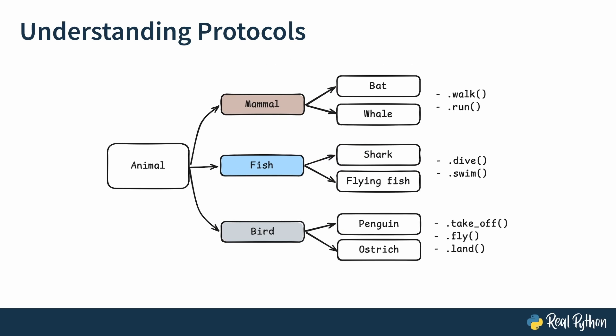For example, a whale is a mammal, so it should go under mammal in your hierarchy. However, whales cannot walk and they cannot run. And the flying fish is a fish, but it can also fly. But it doesn't make sense to put the flying fish under birds. And if you think about penguins and ostriches, those are birds, but those cannot fly. They can walk and they can kind of run and penguins can dive and swim, but they definitely cannot fly.